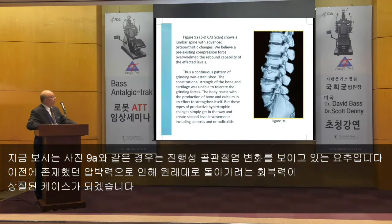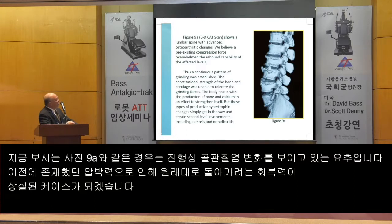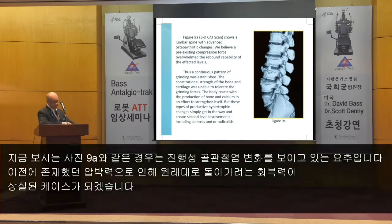In Figure 9A, a 3D CAT scan shows the lumbar spine with advanced osteoarthritic changes. We believe pre-existing compression forces overwhelm the rebound capability of the affected levels.